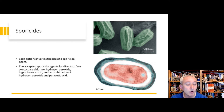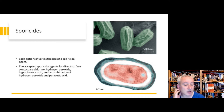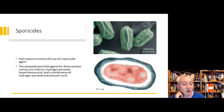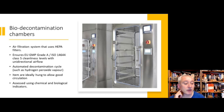There aren't many sporicide agents to choose from: chlorine (most likely chlorine dioxide), hydrogen peroxide, hypochlorous acid, or a combination of hydrogen peroxide and peracetic acid. In vapor form, hydrogen peroxide is by far the most common.